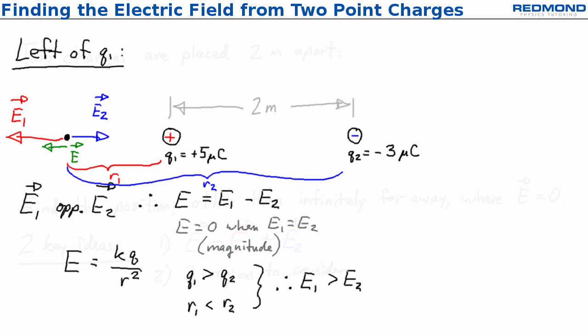In other words, every point left of Q1 is closer to the stronger charge, so the magnitude of E1 is always bigger than the magnitude of E2, and the net electric field cannot be zero.